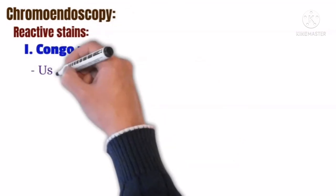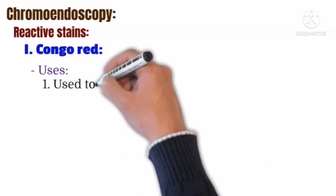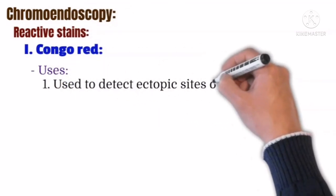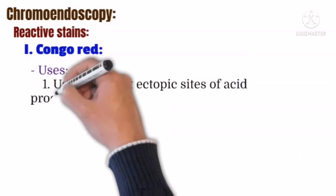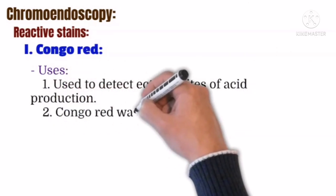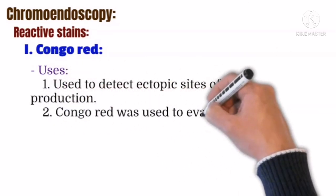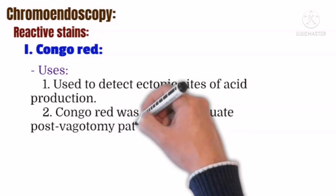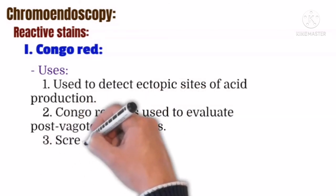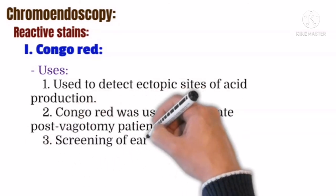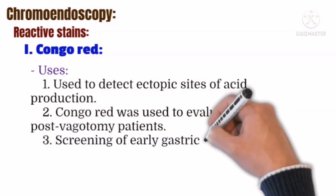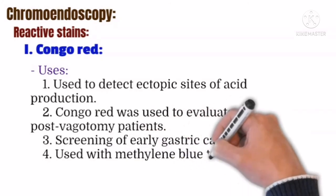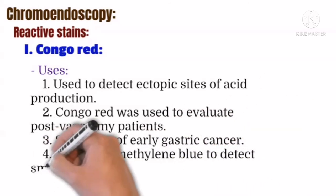Congo red chromoendoscopy is used to detect ectopic sites of acid production, to evaluate post-vagotomy patients, to screen for early gastric cancer, and to be used with methylene blue to detect small foci of intestinal metaplasia.